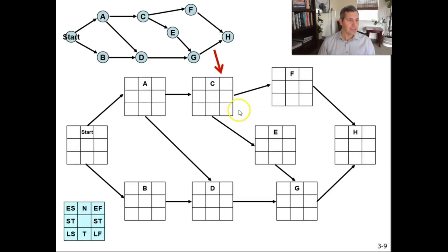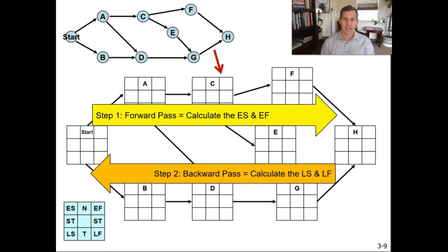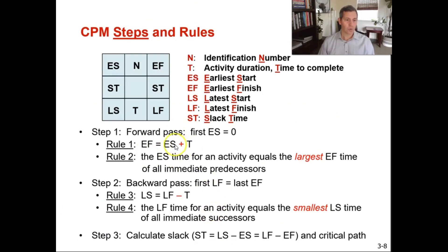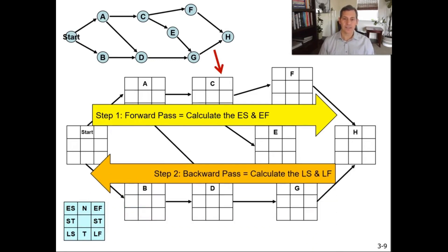Step three is to calculate the slack time: ST equals LS minus ES, or equivalently LF minus EF. If those two numbers are different, you have made an error somewhere in the process. To summarize: on the forward pass you add and look for the largest EF time; on the backward pass you subtract and take the smallest LS time. The forward pass gives you early start and early finish; the backward pass gives you latest start and latest finish. After doing all that, you calculate the slack, and that completes the AON network diagram for the critical path method.